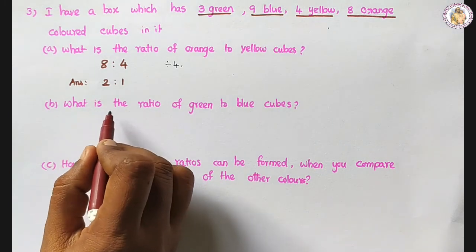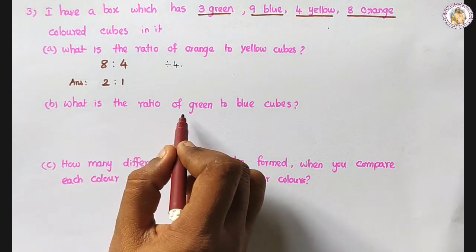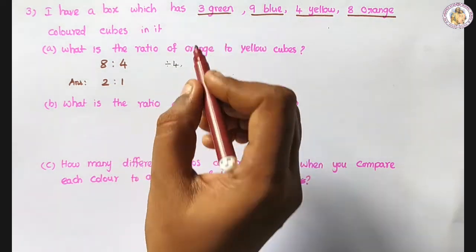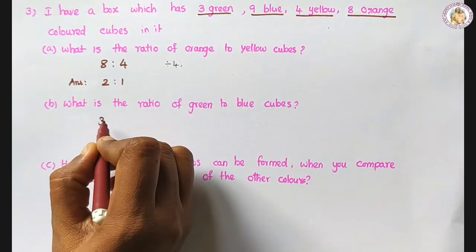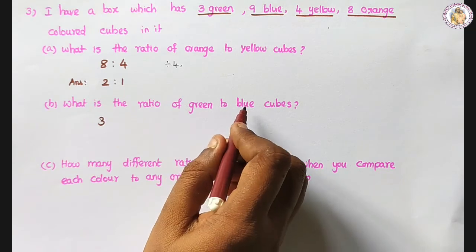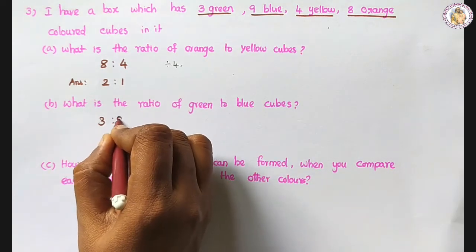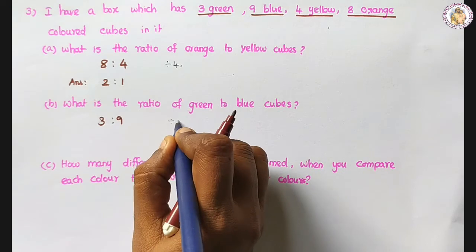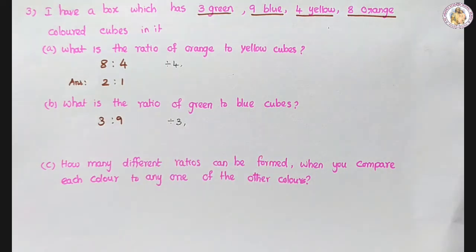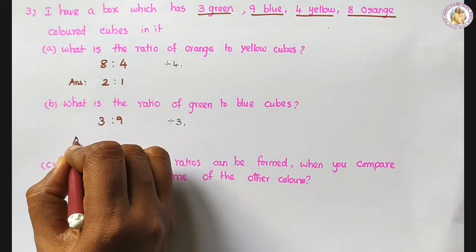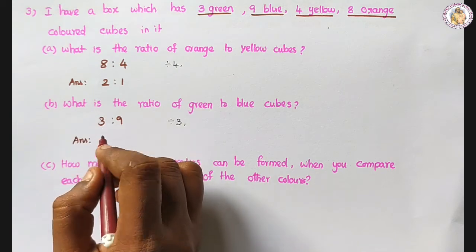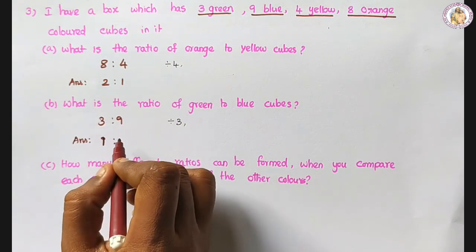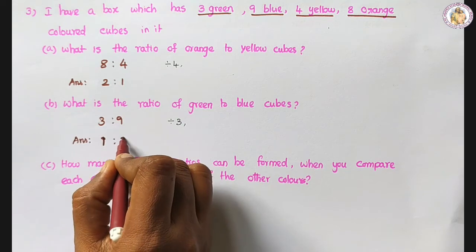Next subdivision: what is the ratio of green to blue cubes? Green is 3, blue is 9. Both are divisible by 3. So the answer: 3 divided by 3 is 1, and 9 divided by 3 is 3. Ratio is 1 is to 3.